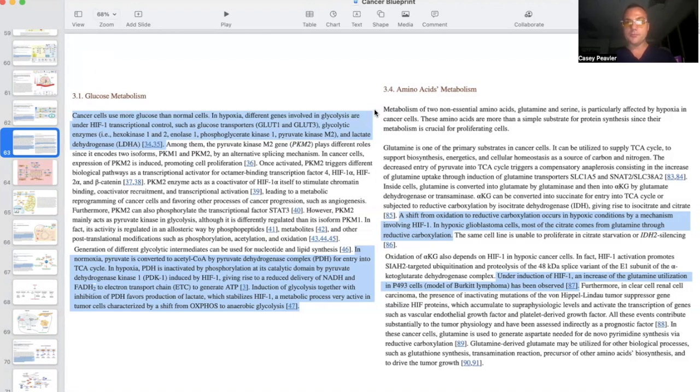I wanted to touch also on amino acids. A shift from oxidation to reductive carboxylation occurs in hypoxic conditions by a mechanism involving HIF-1. In hypoxic glioblastoma cells, most of the citrate comes from glutamine through reductive carboxylation, and under induction of HIF-1, an increase in glutamine utilization in P493 cells, a model Burkitt's lymphoma, has been observed. What I'm trying to illustrate here is not only is HIF-1 increasing glycolysis, shutting down TCA and oxidative phosphorylation, it's also upregulating glutamine. Remember, these are the two major fuel sources for cancer, for the Warburg effect to drive cancer further.